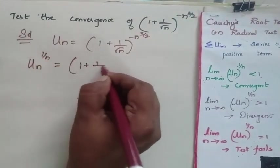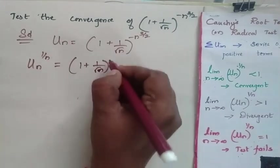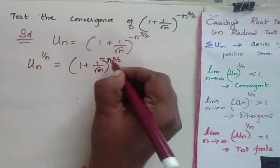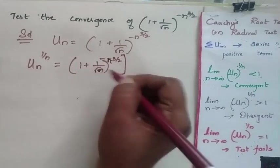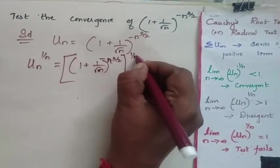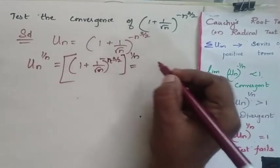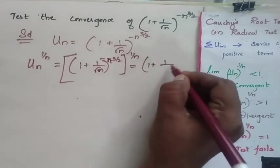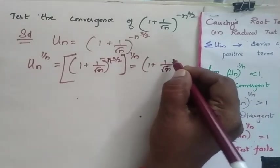So this is (1 + 1/√n)^(-n^(3/2)) the whole power 1/n. So this I will be getting as (1 + 1/√n) into minus n power 3/2 divided by n.